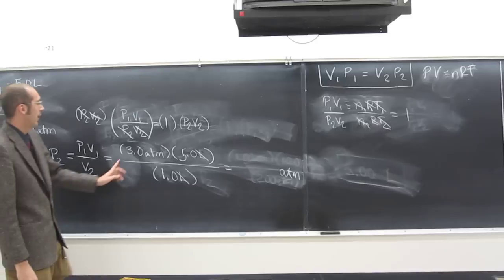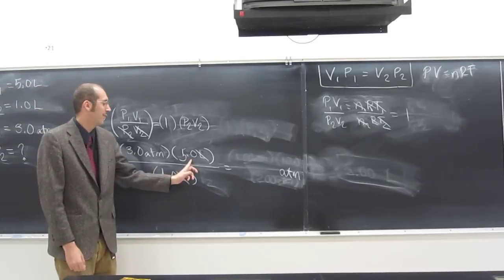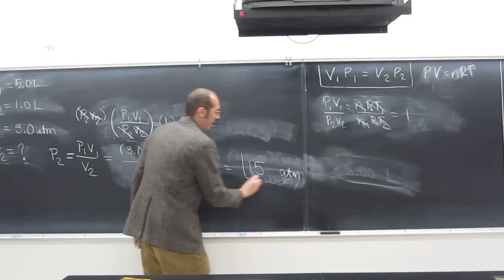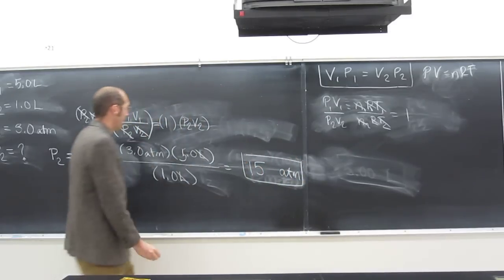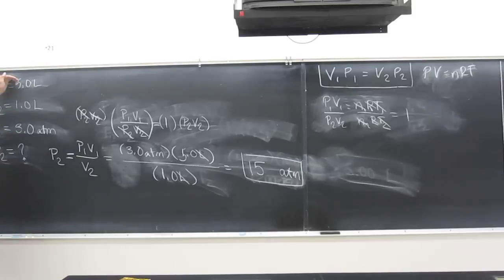So what is this? Should we get our calculator? It's 15. So 3 times 5, so is it 15.0 or just 15, right? Why is that? Because of significant figures - 2 sig figs. Any questions on this one? Do you see what we did? That's the same but different, you know?